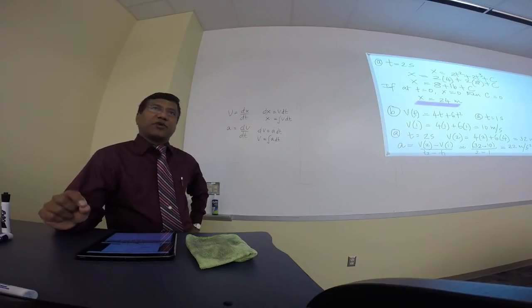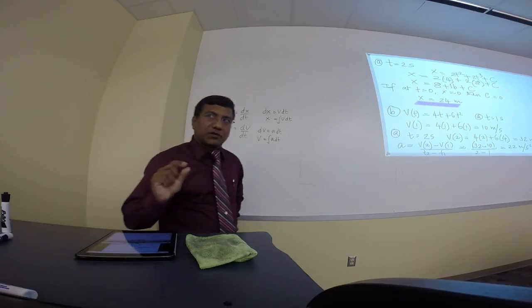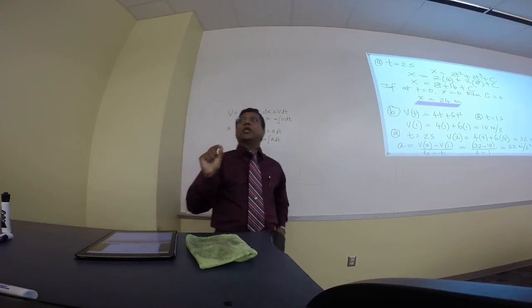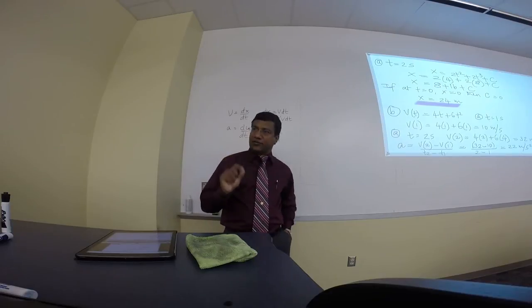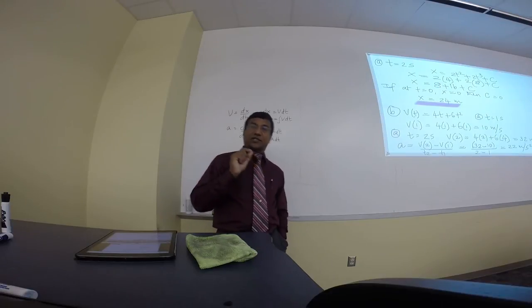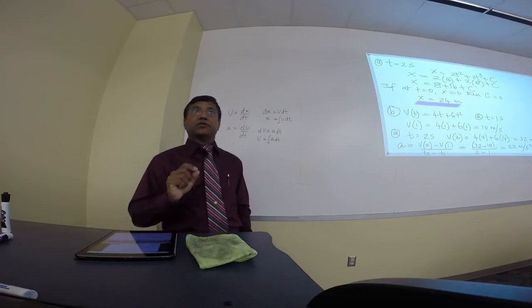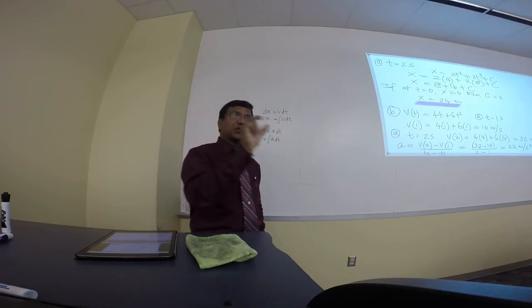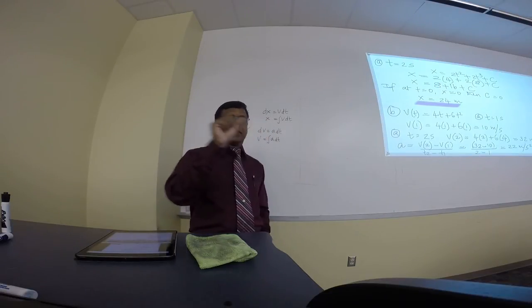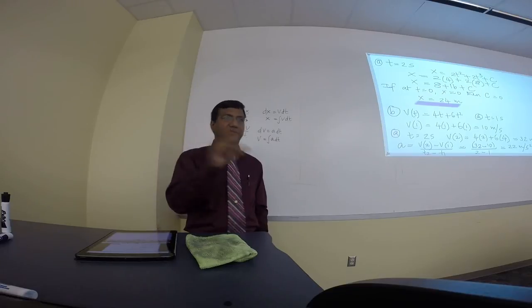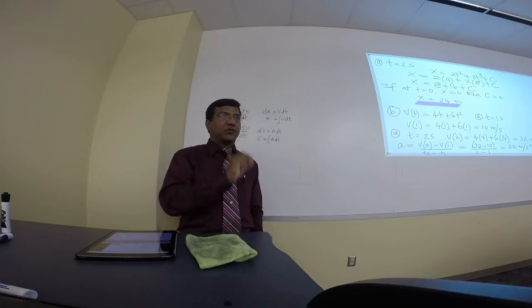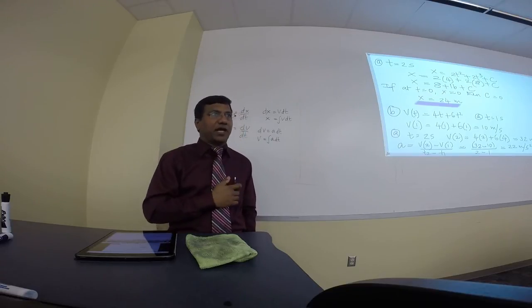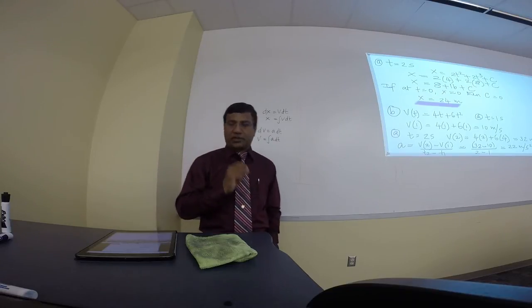Key point: when asked for average acceleration, do NOT differentiate. Just substitute the given times into the velocity function, take the difference in velocities, and divide by the difference in time. Keep that in mind.